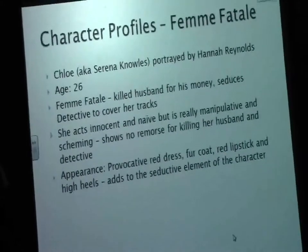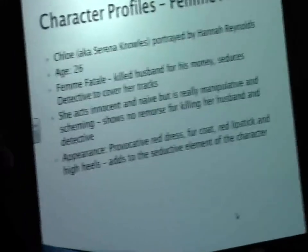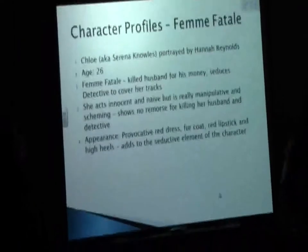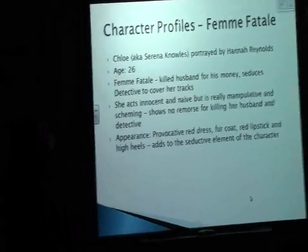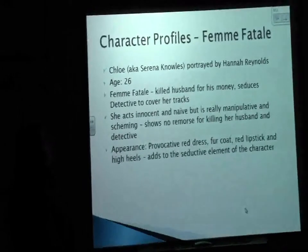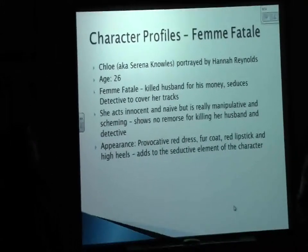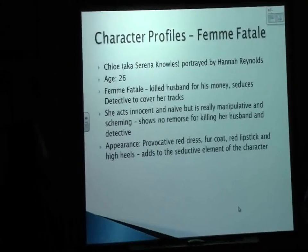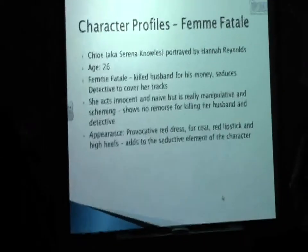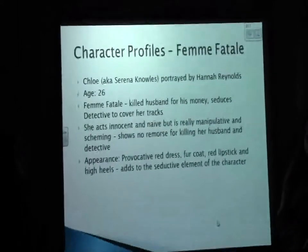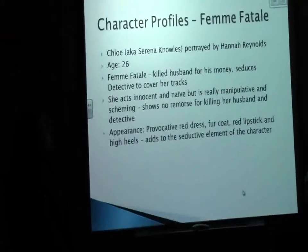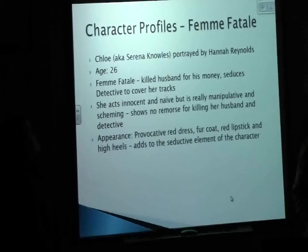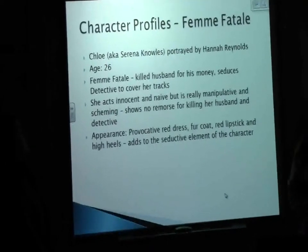After this, we looked at character profiles and decided what codes and conventions to follow. Our femme fatale is Chloe, who uses the alter ego Serena Knowles. We chose 26 as her age — quite young and glamorous. In the film, she kills her husband for his money and seduces the detective to cover her own tracks. We wanted her to act innocent and naive to seduce the detective, but she's really manipulating and scheming. She shows no remorse for her husband nor the detective at the end.